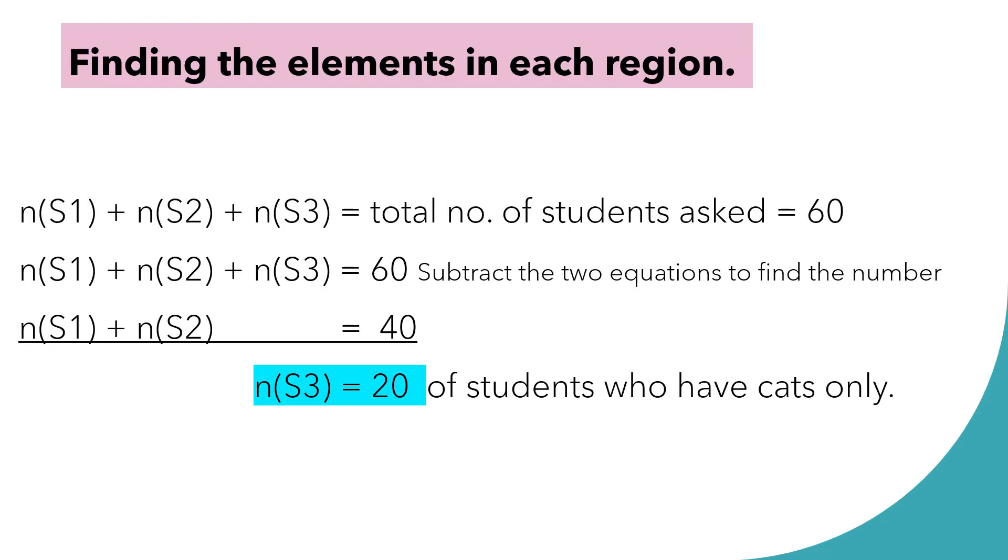For finding the elements in this region, we are going to have this formula. N quantity S1 plus N quantity S2 plus N quantity S3. N represents the number. Is equal to the number of students asked is equal to 60. And then, we are going to subtract 60 by 40. 40 represents the number of students who have dogs. If we are going to find the number of cats, we are going to subtract 60 by 40. So, our S3 or the number of cats is 20. 20 of students who have cats only.